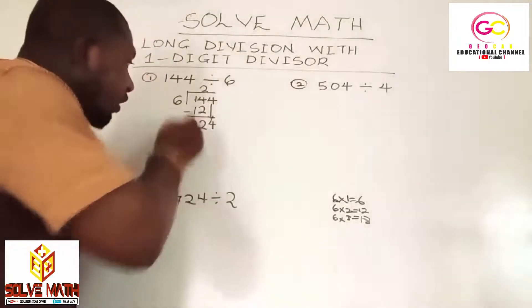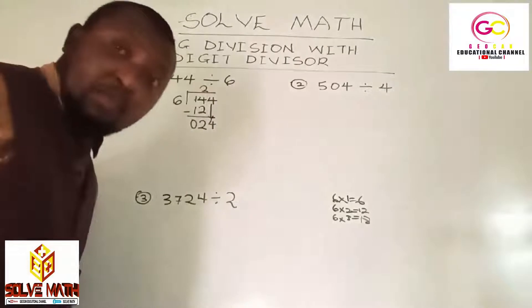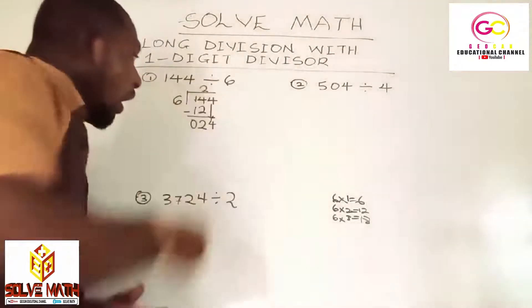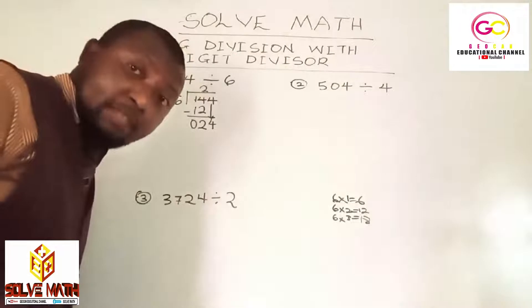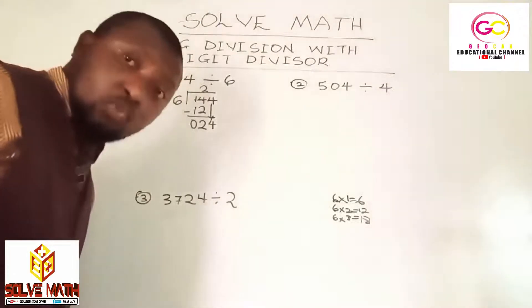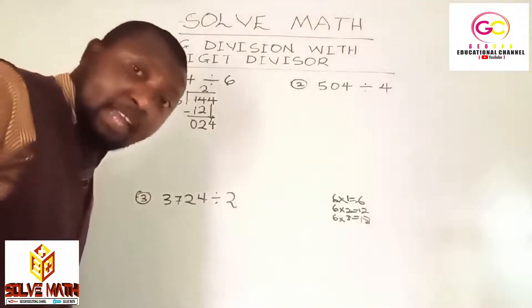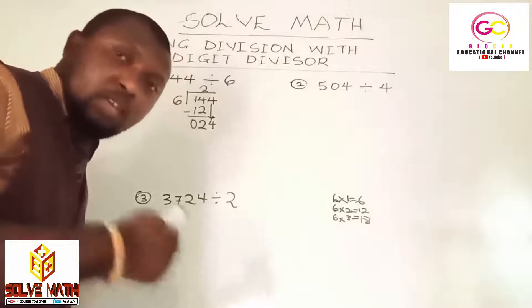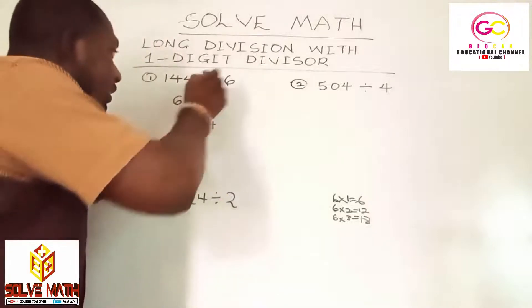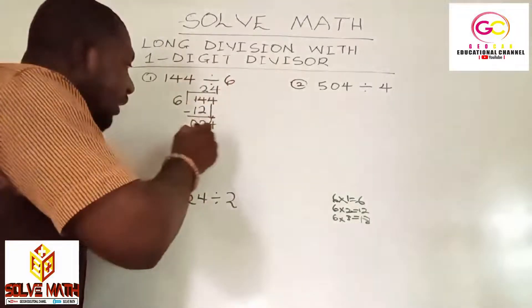What do we have over here? It's no longer 2, but 24. So 6 will go into 24 how many times? 6 times 1 is 6, 6 times 2 is 12, 6 times 3 is 18, 6 times 4 is 24. So 6 will go into 24 four times. 6 times 4 is 24.